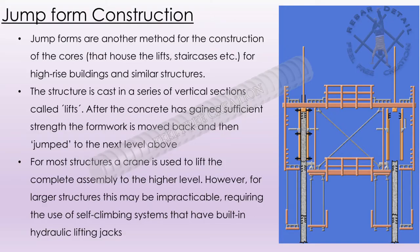Now we see jump form construction. Jump forms are another method for the construction of cores that house the lifts, staircases, etc., for high-rise buildings and similar structures. The structure is cast in a series of vertical sections called lifts. After the concrete has gained sufficient strength, the formwork is moved back and then jumped to the next level above. For most structures, a crane is used to lift the complete assembly to the higher level. However, for larger structures this may be impracticable, requiring the use of self-climbing systems that have built-in hydraulic lifting jacks.